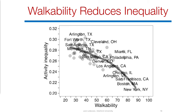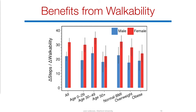Looking at who would benefit from increased walkability — how many steps would a one-unit change in walkability score add to a given sub-population — everyone benefits, but females benefit the most. Even at the level of whether people are overweight or normal BMI, all parts of the population benefit.